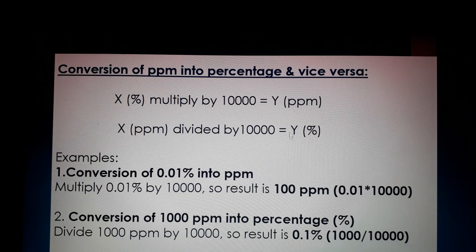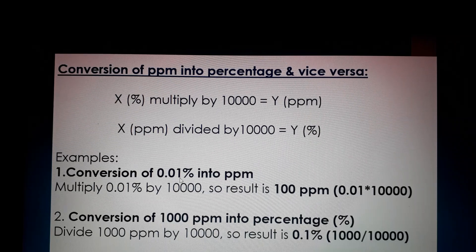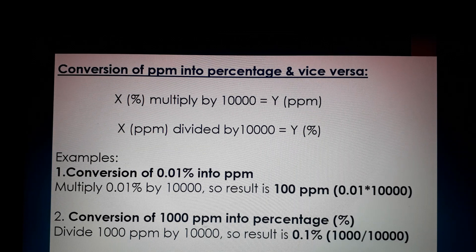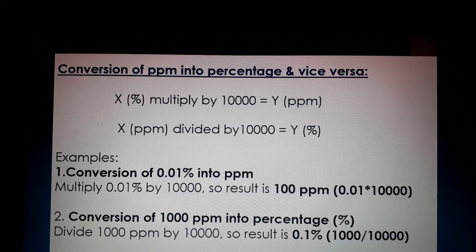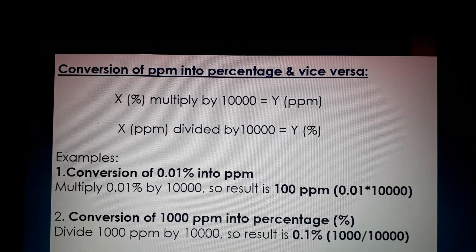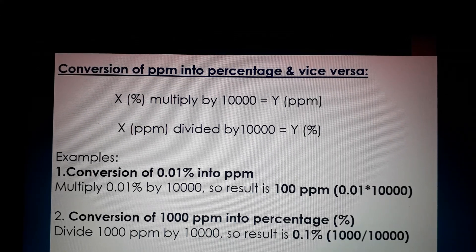For example: to convert a 0.1 percent solution to PPM, multiply by 10,000 — the result is 1000 PPM. Wait, correcting the example given: 0.1 percent times 10,000 gives 1000 PPM. To convert 10,000 PPM into percentage, divide 10,000 by 10,000 — the result is 1 percent. This way you can convert percentage to PPM and PPM to percentage using this formula to prepare concentrated solutions.